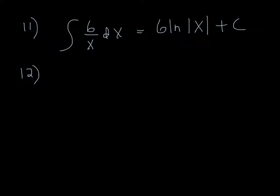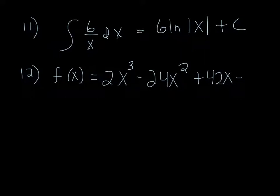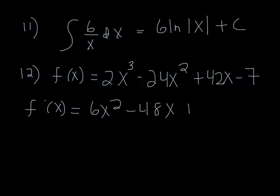Number 12, we are given a function which is 2x³ - 24x² + 42x - 7. It has two critical points. We need to find them. So we need to take the derivative: 6x² - 48x + 42. And we need to set that equal to 0 and solve.